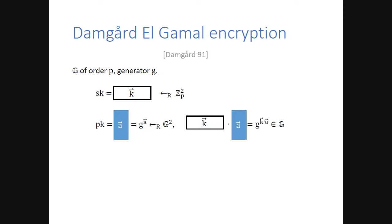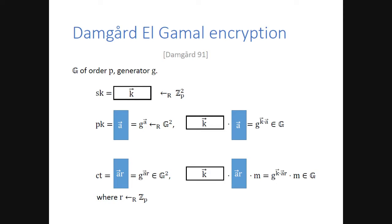The secret key is a random vector of exponents of dimension 2, k. The public key contains a random vector of group elements of dimension 2, and the inner product of vector k with vector a, done in the exponent. To encrypt a message, one picks a random exponent r and computes a times r, and the corresponding k times ar, which serves as an encapsulation key for the message m, which is a group element. To decrypt, one uses the secret key k, multiplies with the first part of the ciphertext to get the encapsulation key and recover the message.